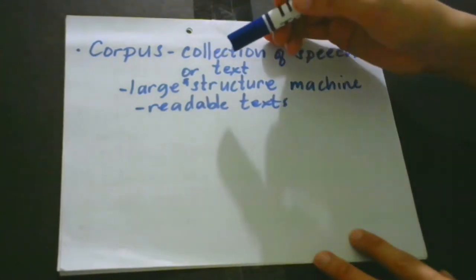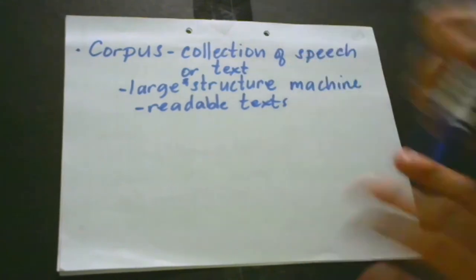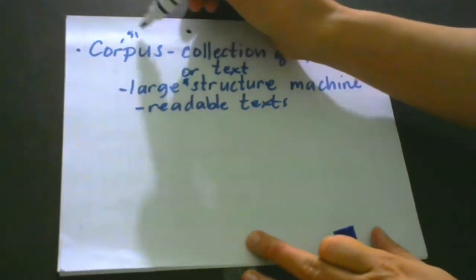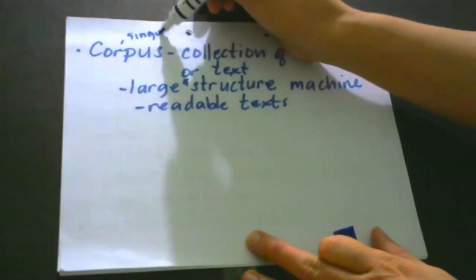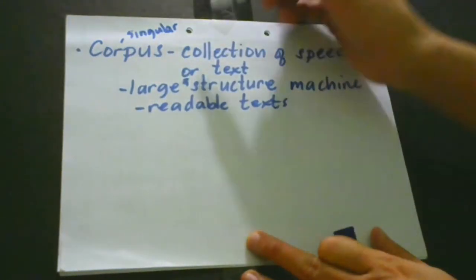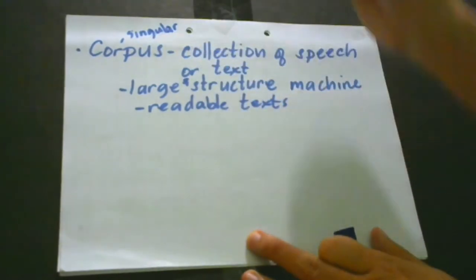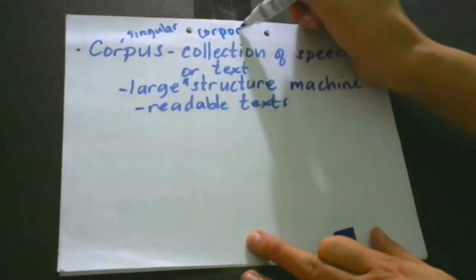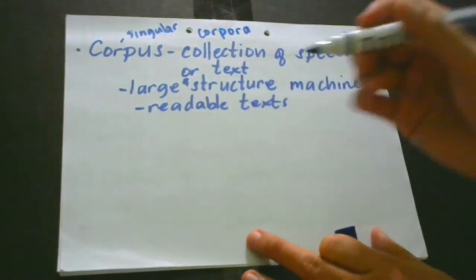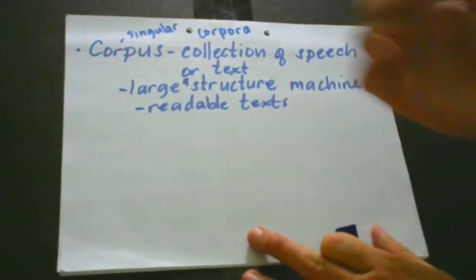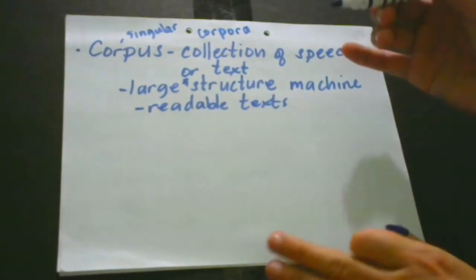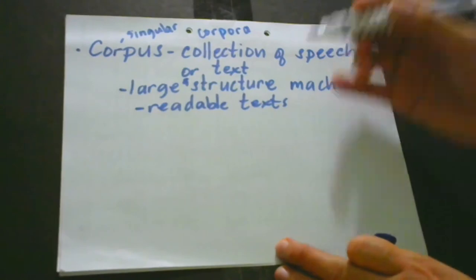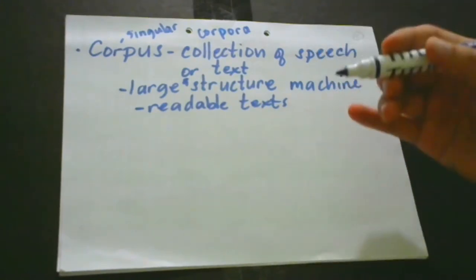So corpus, or corpora — corpus is singular, meaning one, and when it is plural it becomes corpora. This is very important, especially when we are talking about linguistics in natural language processing. So corpus, or corpora, is a collection of text or speech.